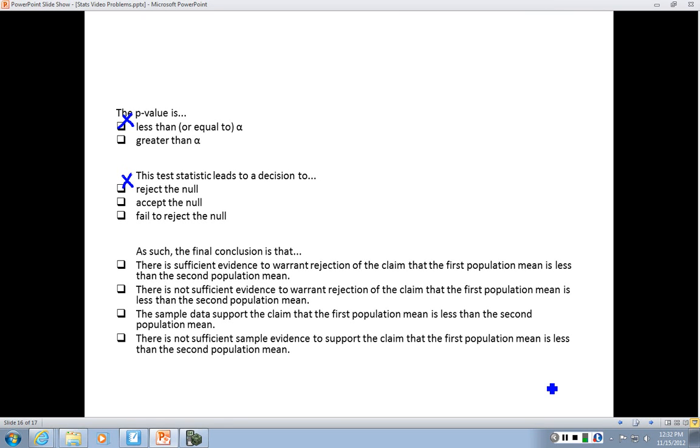That would be the third one, that the sample data support the claim that the first population mean is less than the second population mean, because that's what the alternative hypothesis is, that claim that the first is less than the second. The sample data support it. We have rejected the null hypothesis in favor of that hypothesis. So there is our answer that the sample data support the claim that the first population mean is less than the second population mean.